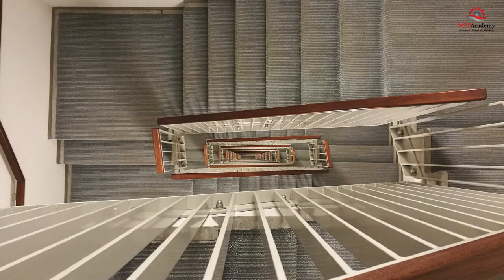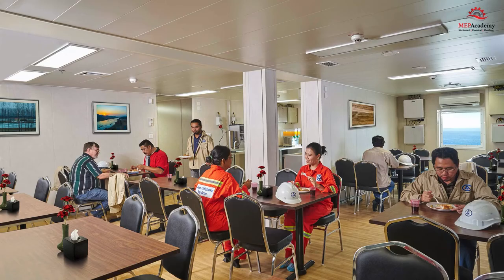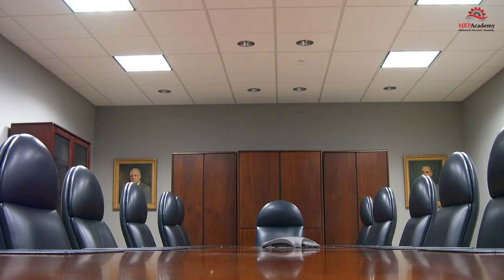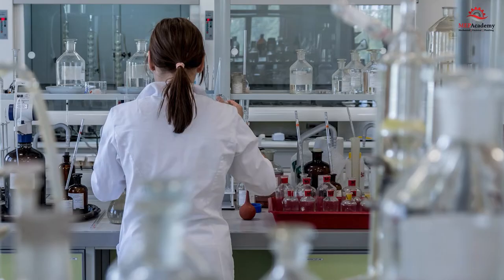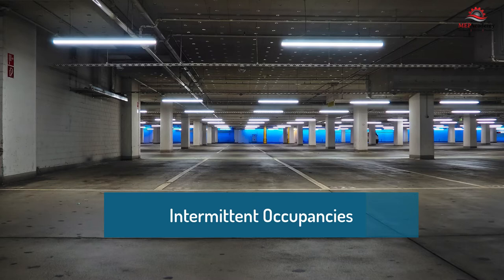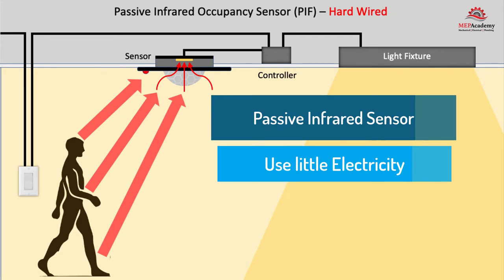Occupancy sensors can save energy when located in stairwells, classrooms, break rooms, cafeterias, bathrooms, open office spaces, conference rooms or meeting rooms, warehouses, laboratories, and parking garages. Occupancy sensors should be located wherever there is intermittent occupancy.